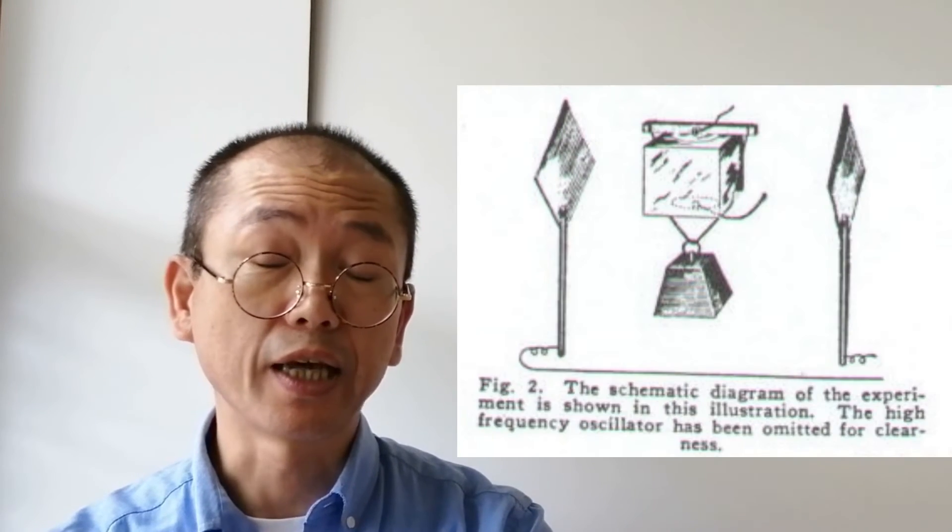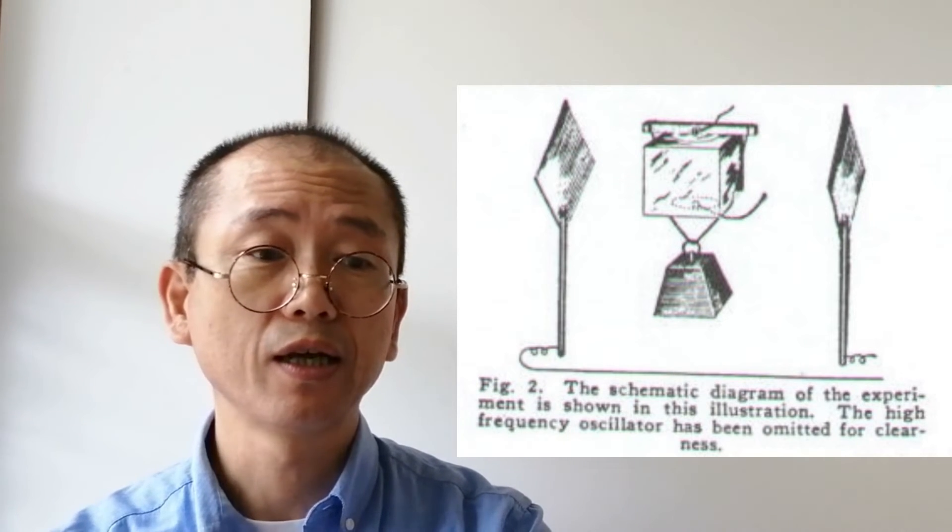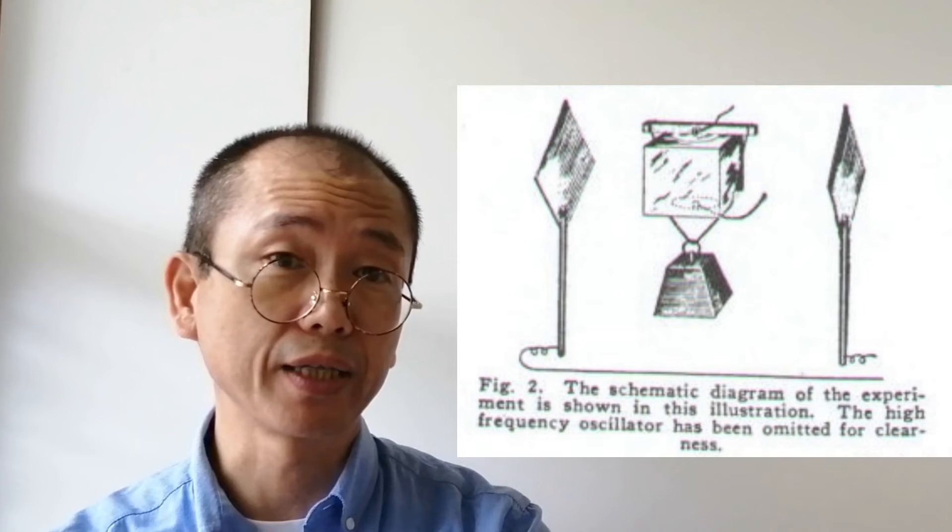Let me see more details. First, the electrostatic field was produced horizontally by two rhombus-shaped plates.